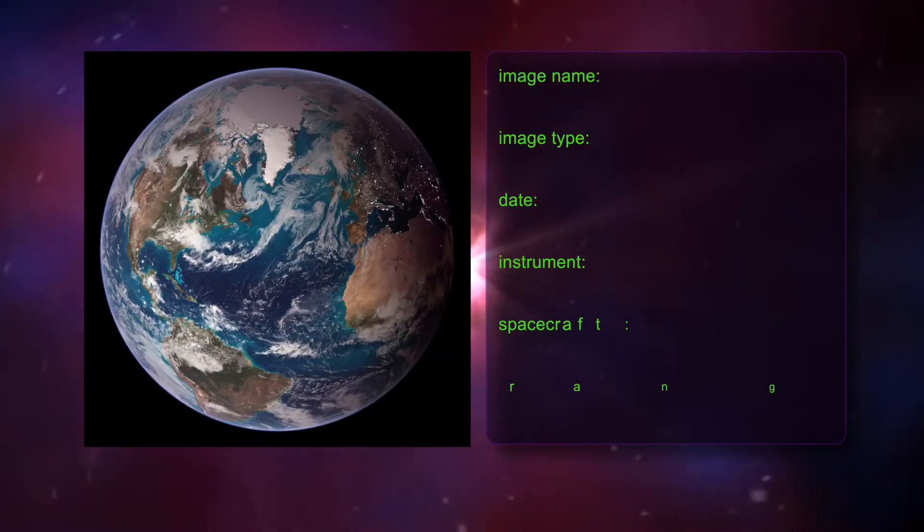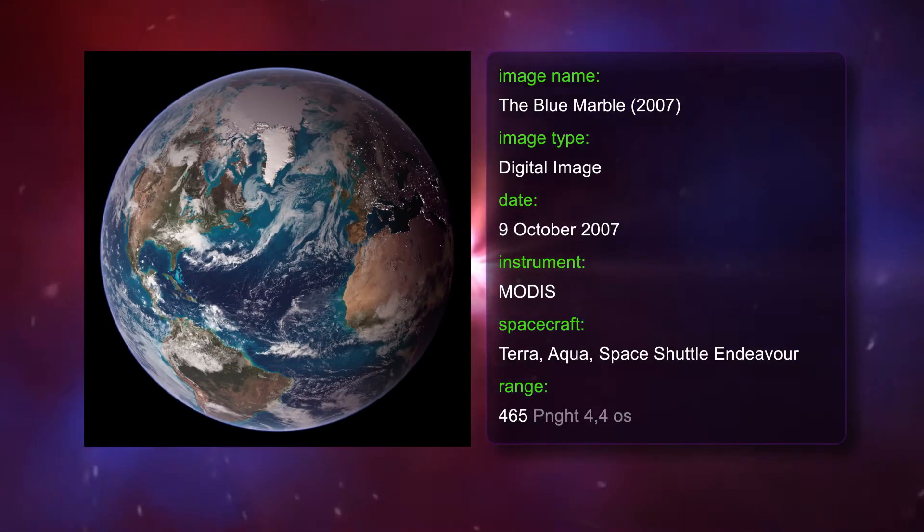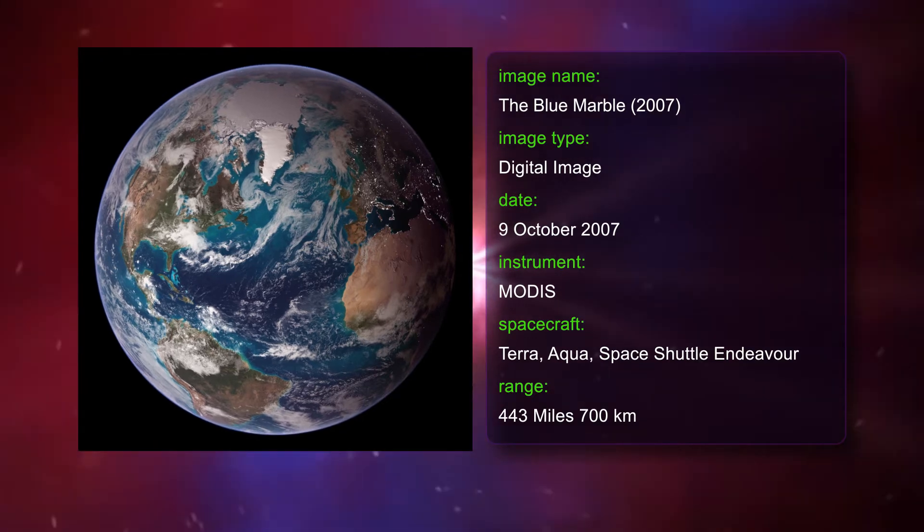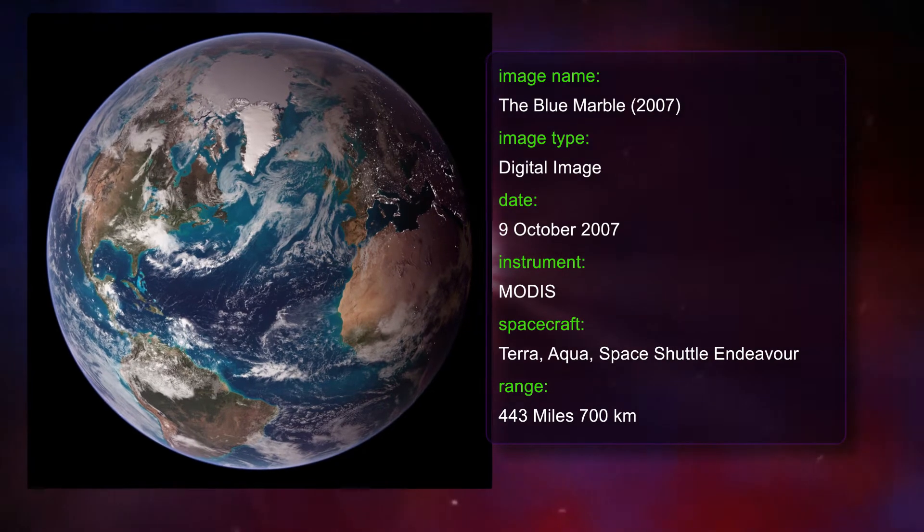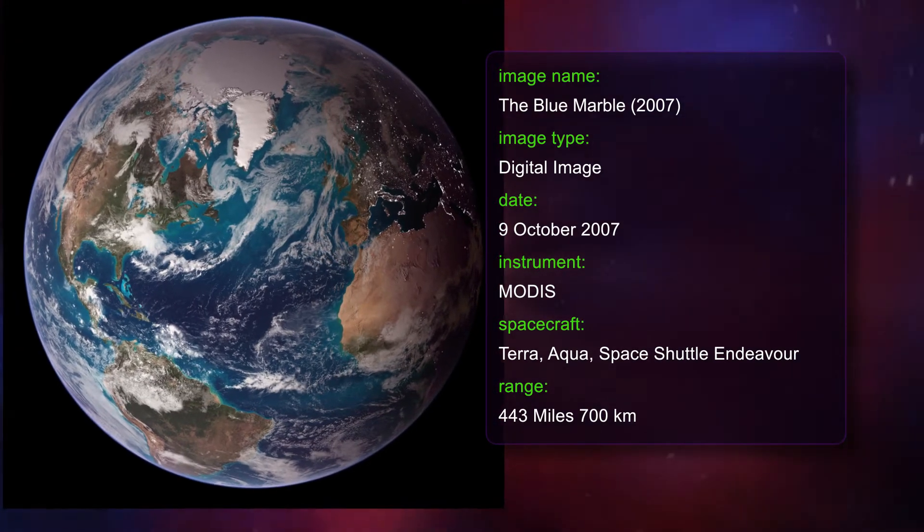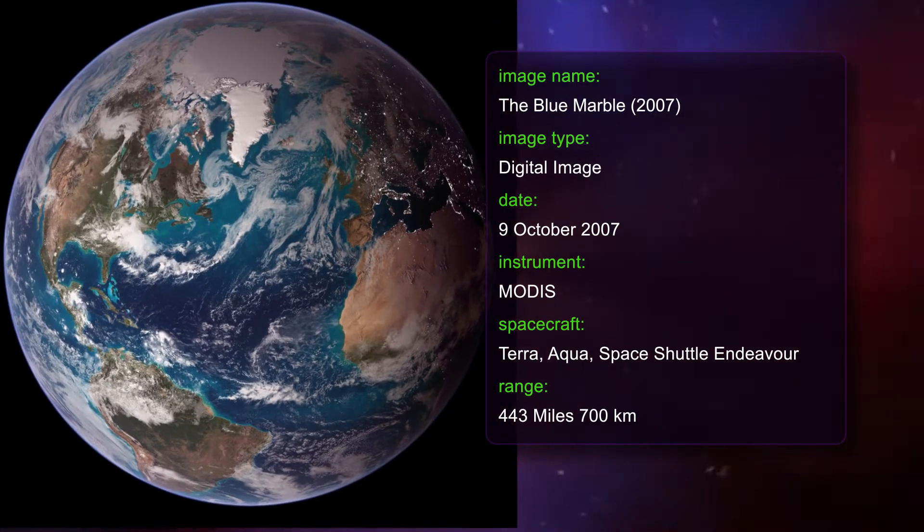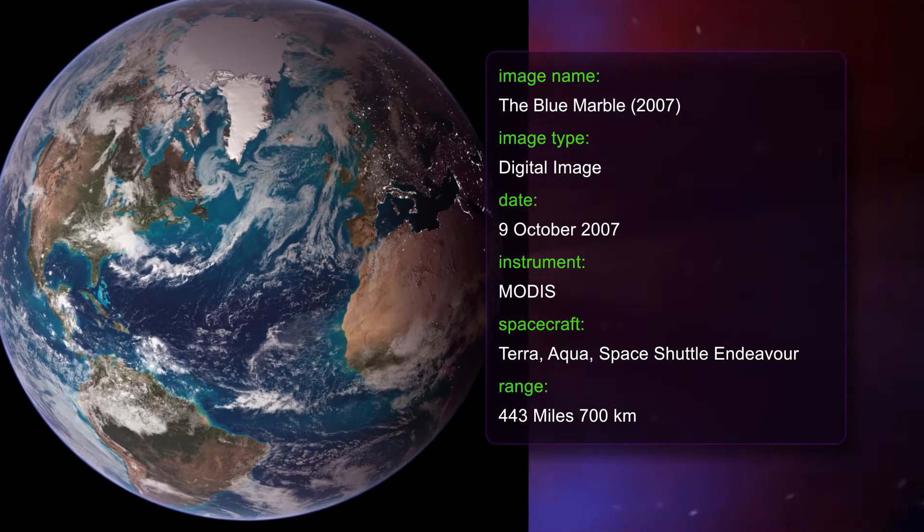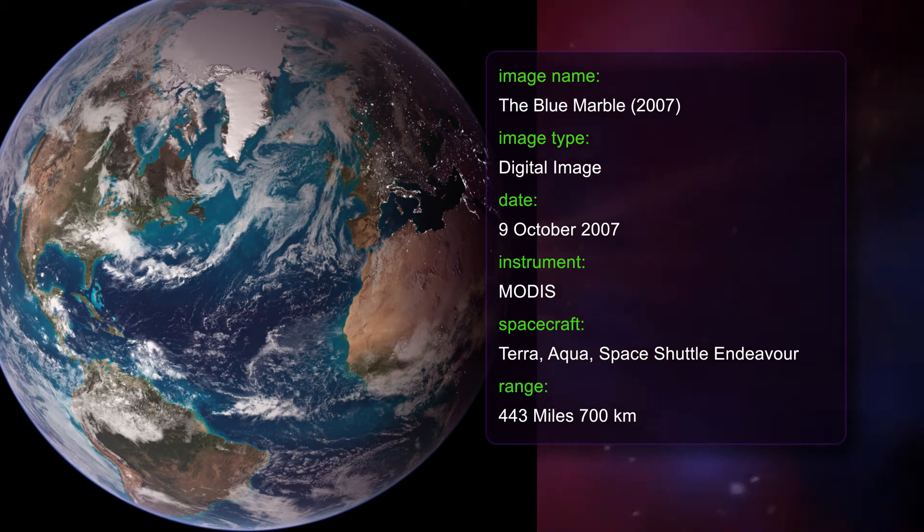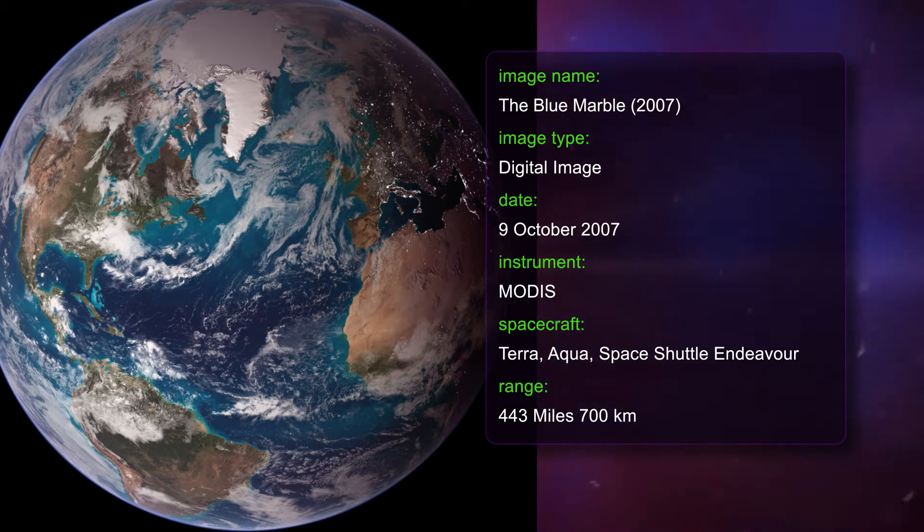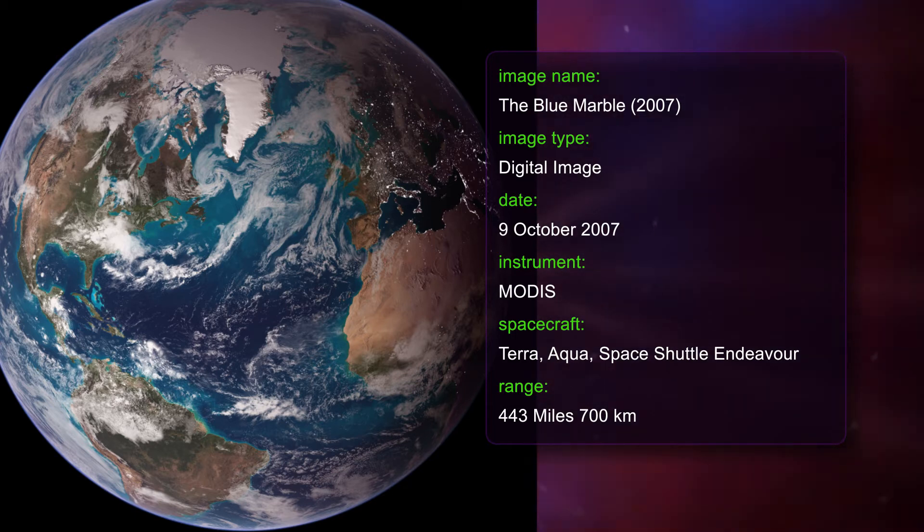The Blue Marble 2007 draws on data from multiple satellite missions not all collected at the same time. It features layers of global data for everything from the land surface to the light reflected by the chlorophyll in the billions of microscopic plants that grow in the ocean. The land surface layer is based on photolight reflected sunlight observations measured by the MODIS instrument on NASA's Terra satellite in July 2004.